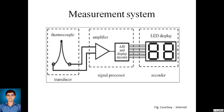Basically, in a mechatronic system we study two different systems: one is the measurement system and the other is the control system. The work of the measurement system is to measure only whatever quantity is to be measured. Like in this example, the diagram shows a thermocouple. A thermocouple is a sensor, also called a transducer — this makes up the sensor part. The next part is the signal conditioning part — that is, the amplifier and A-to-D converter. And lastly, the display. This is only a measurement system — we are not going to control any parameter.